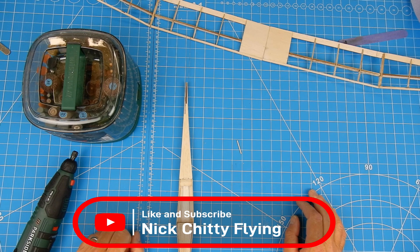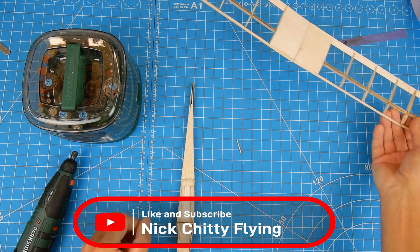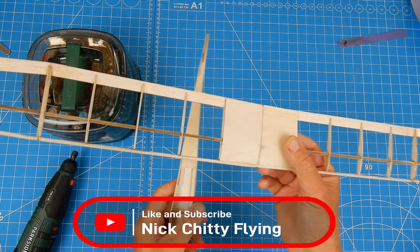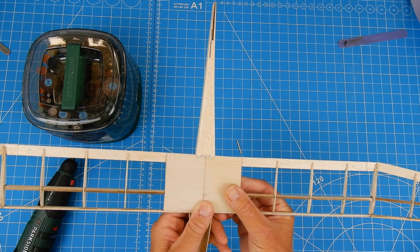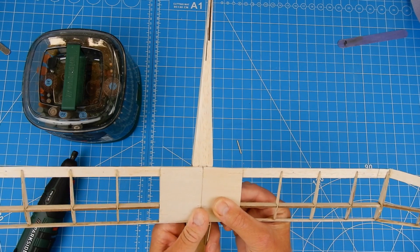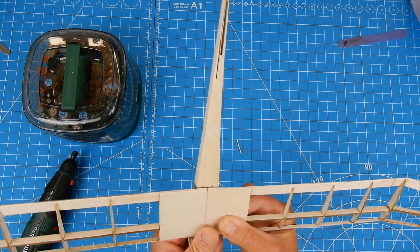So the next thing we're going to do to the Micro Aquila is sort out the wing joining. Now the idea is that this is going to drop into here like so and you've just got to make sure that that fits well.